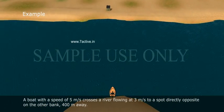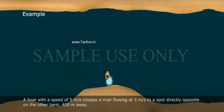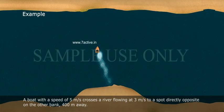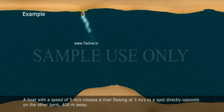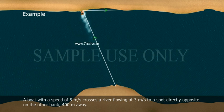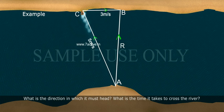A boat with a speed of 5 m per second crosses a river flowing at 3 m per second to a spot directly opposite on the other bank, 400 m away. What is the direction in which it must head? What is the time it takes to cross the river?